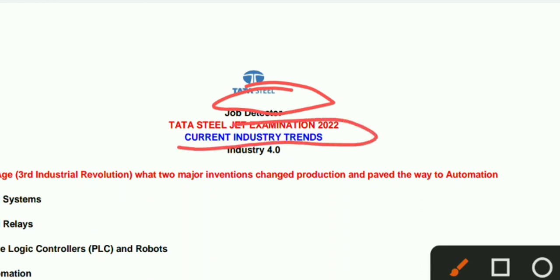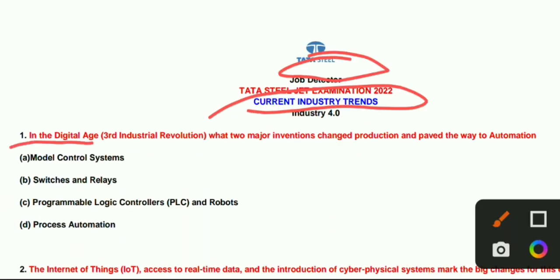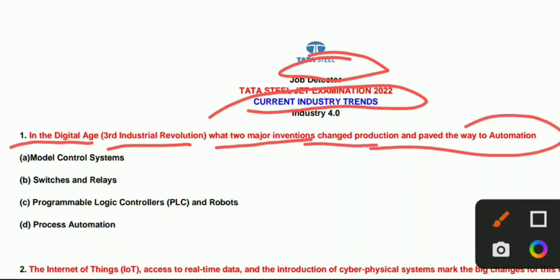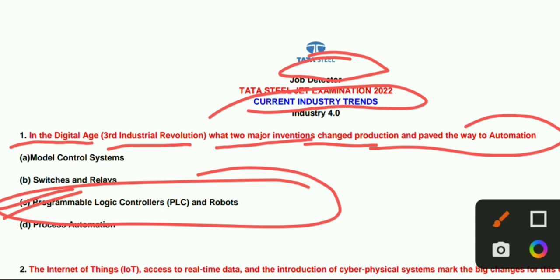Let's go to our current industrial trends questions. In the digital age, the third industrial revolution — what are the two inventions that can change production and pave the way to automation? The two major inventions are the Programmable Logic Controller (PLC) and robots. These are the two major inventions which can change our production and the path to automation.